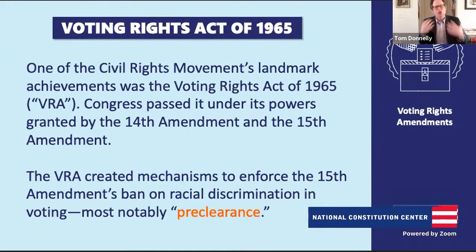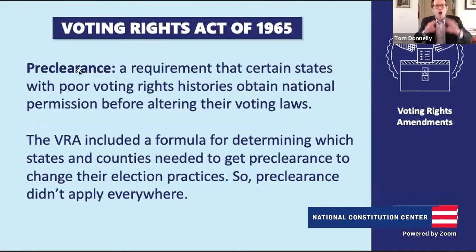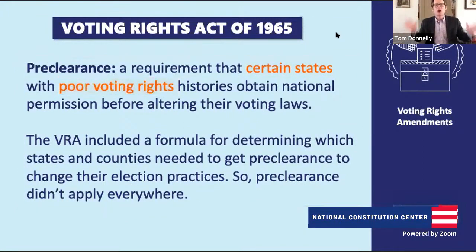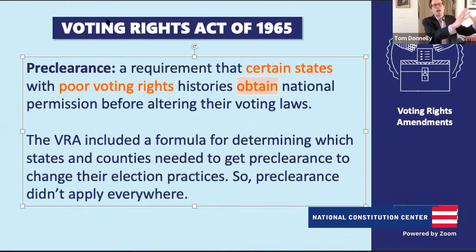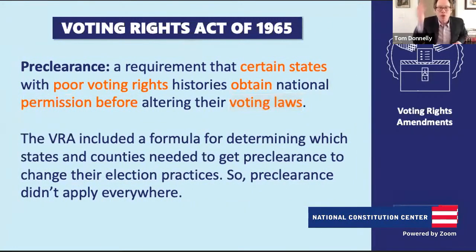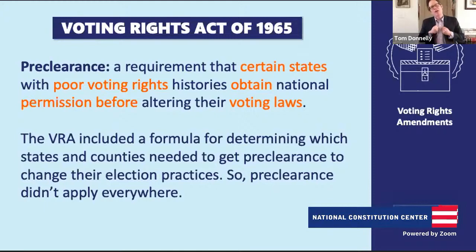The Voting Rights Act of 1965 is the act that really puts teeth into the 15th Amendment. It arises out of the Civil Rights Movement—one of its crowning achievements. It is the way Congress decided to take on Jim Crow laws in voting head-on. The really big feature of this act is preclearance: looking at all the states, examining their record on voting rights and racial discrimination. If a state has a bad record on voting rights, it cannot change its voting or election laws without the national government's approval first.